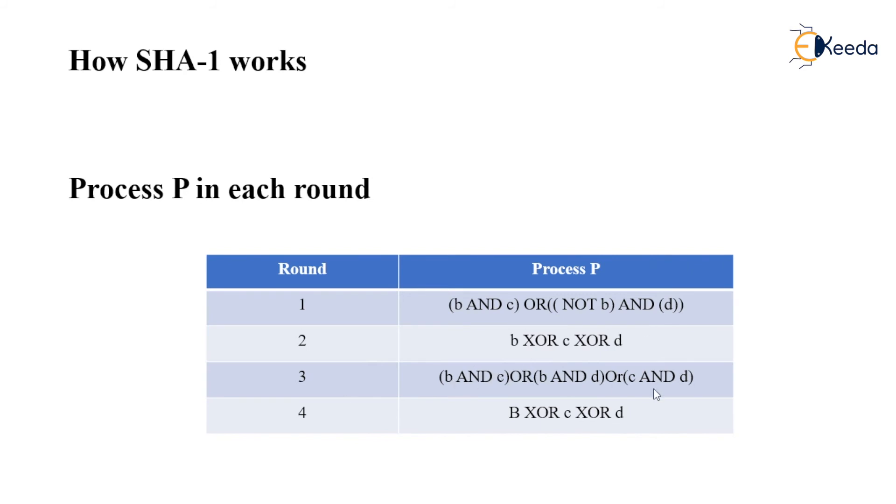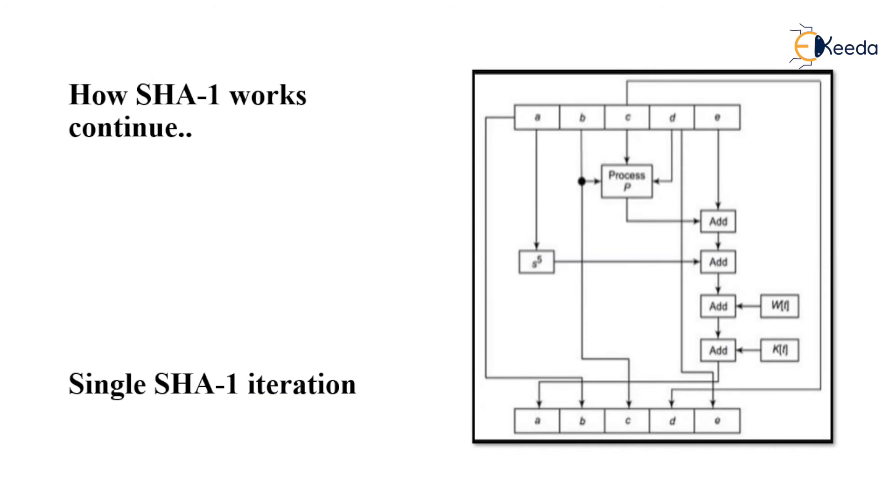These logical operations take place on the A, B, C, D, E constants, which are the five different variables. This is the single iteration of the SHA algorithm, wherein the five variables are undergoing process P.